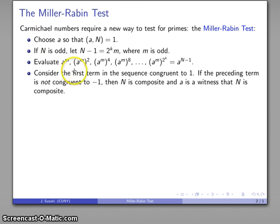Now, what we're going to do is look through this sequence and find the first term that's congruent to 1. If we are even applying this test, we know this last term has to be congruent to 1, which suggests that the number might be prime.